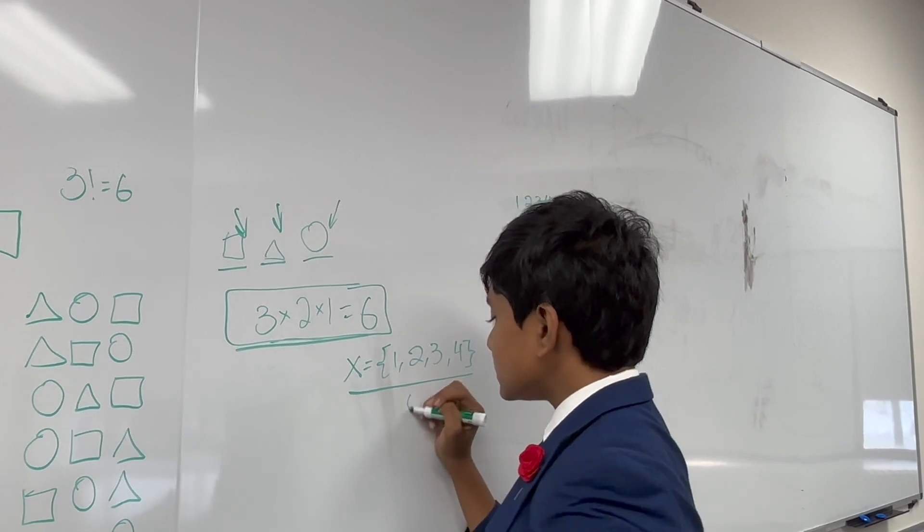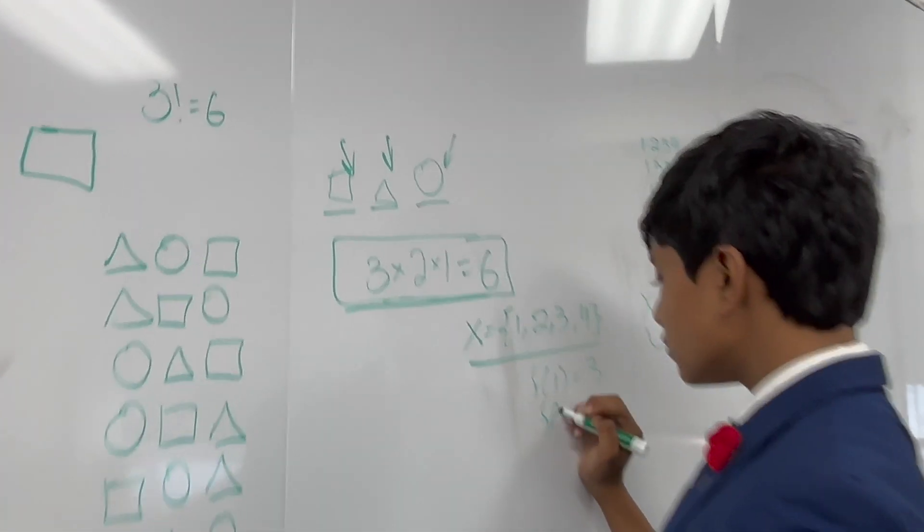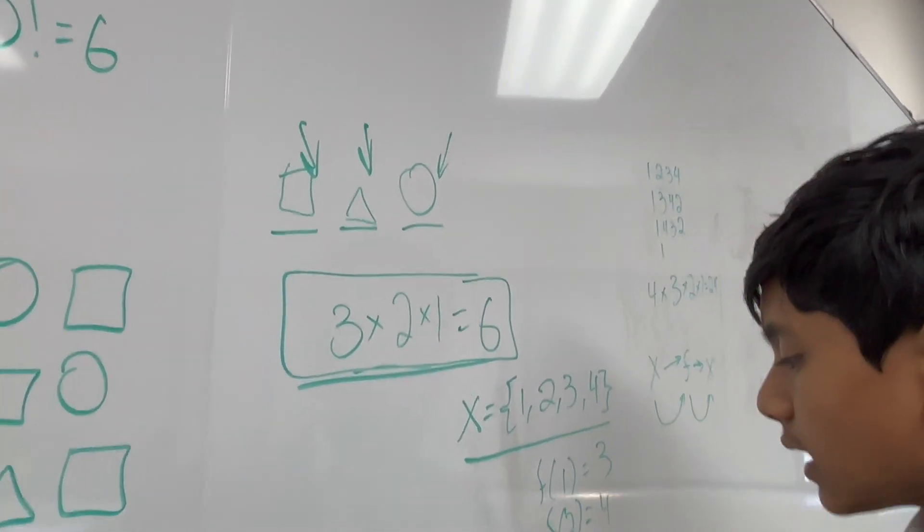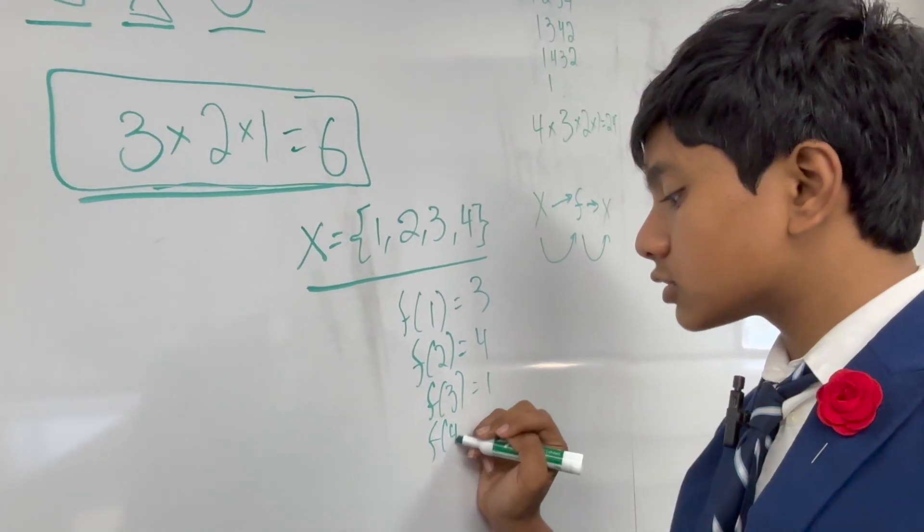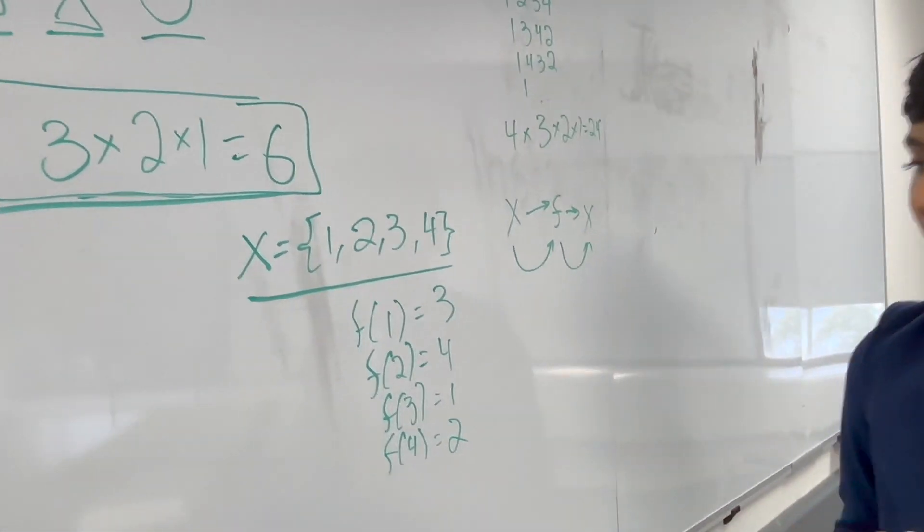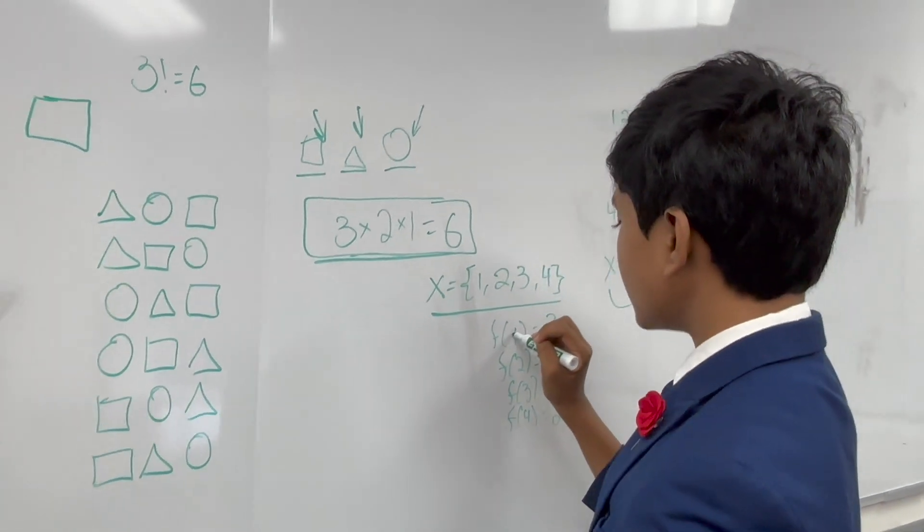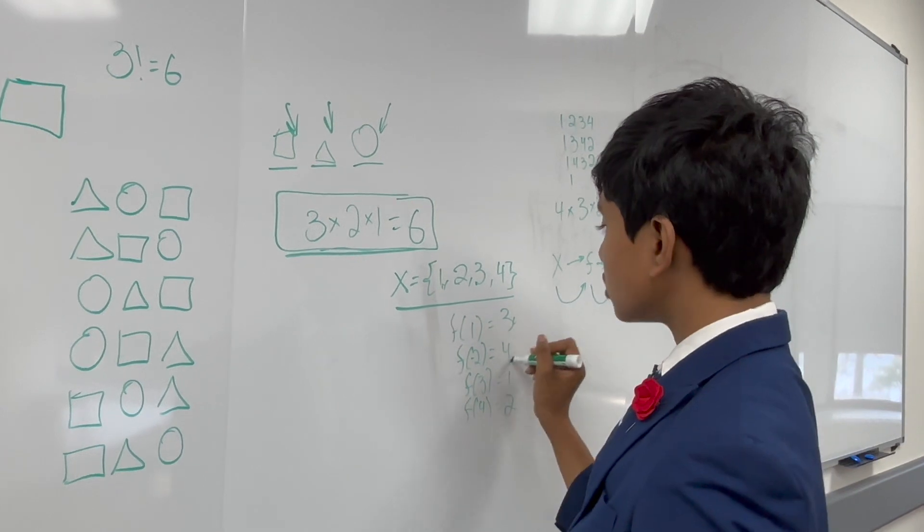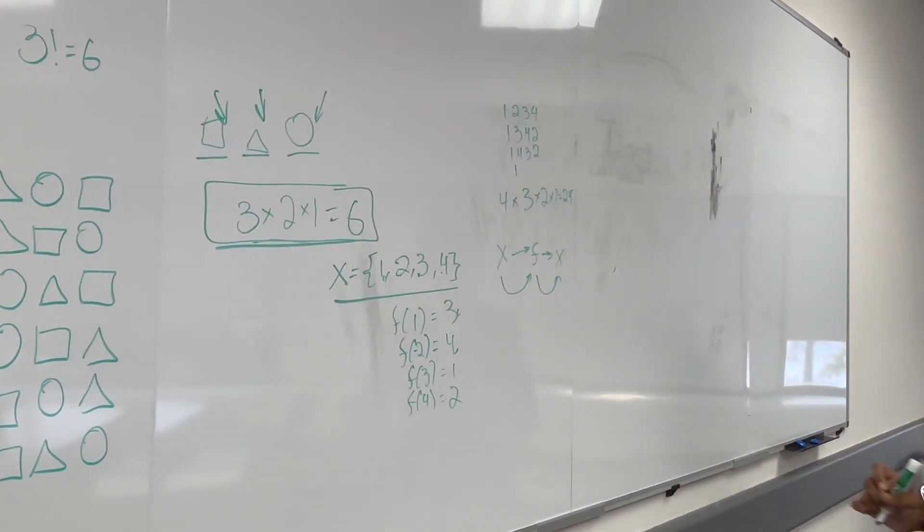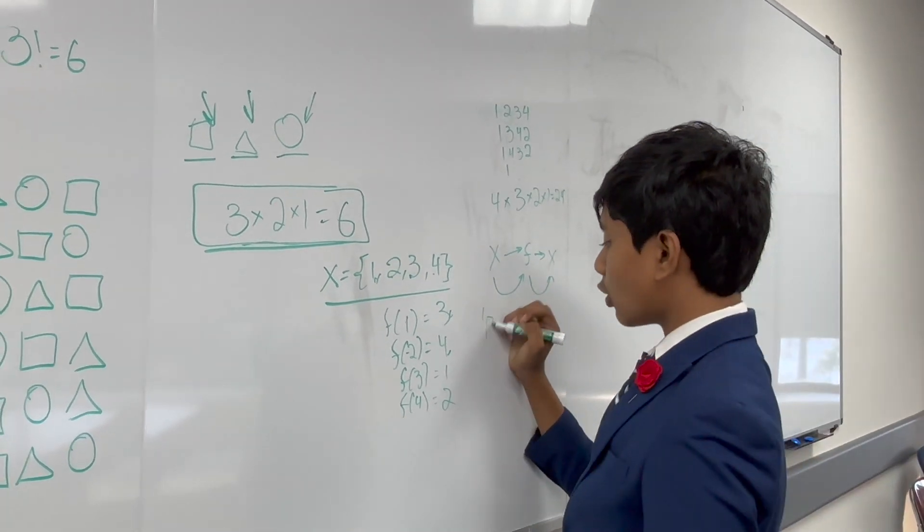Let's try an example. Let's say f of 1 is equal to 3. f of 2 is equal to 4. f of 3 is equal to 1. And f of 4 is equal to 2. Now, in this case, everything is mapping something inside x to another element that is also inside x. So, now, we're going to be doing something called permutation notation.